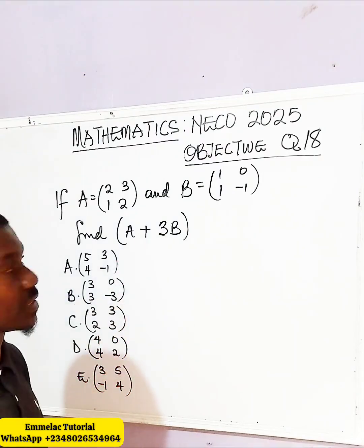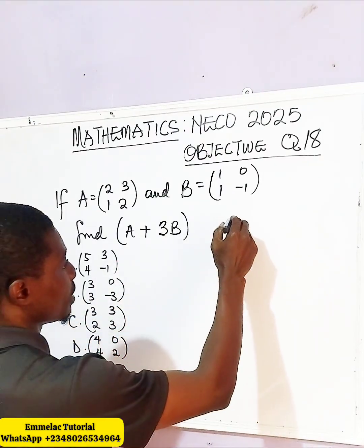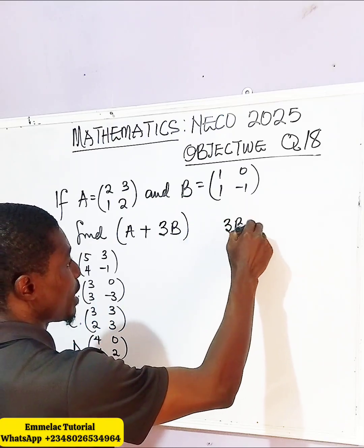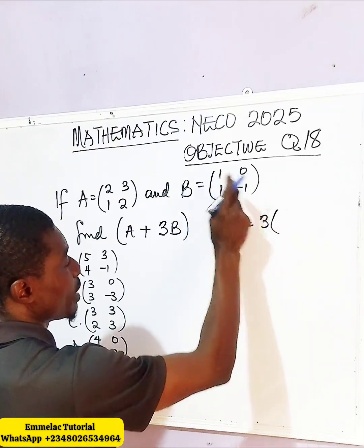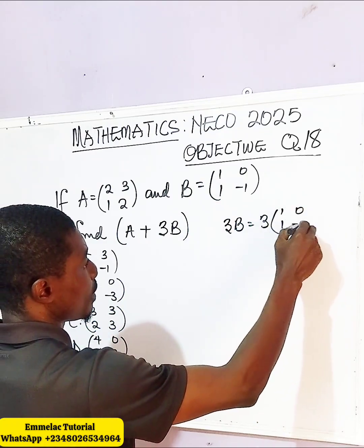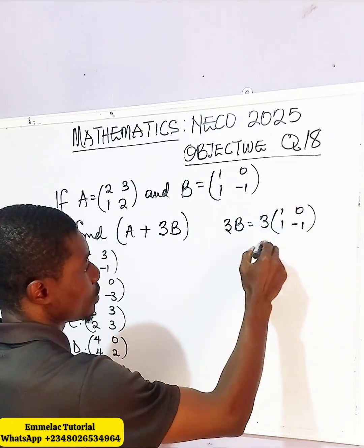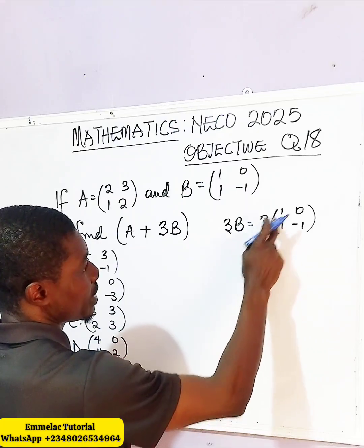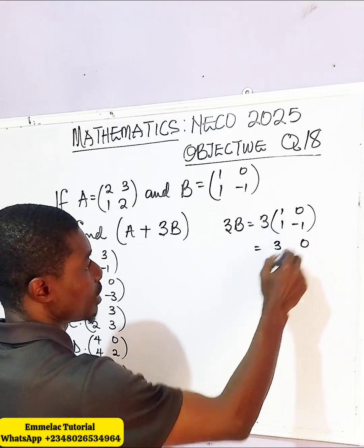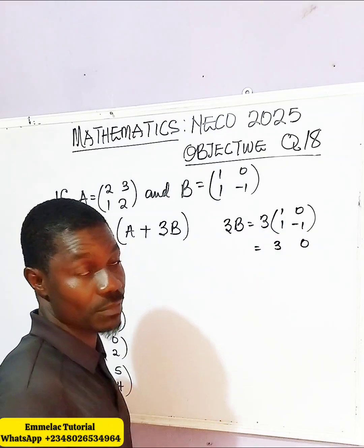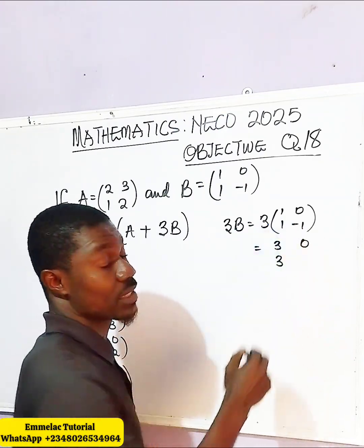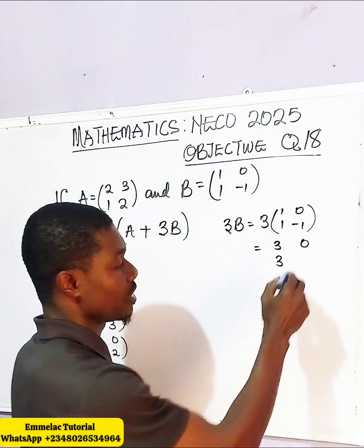So first of all, let's find 3B. 3B implies 3 multiplied by the whole matrix, giving us: 3 times 1 is 3, 3 times 0 is 0, 3 times 1 is 3, and 3 times negative 1 is negative 3.